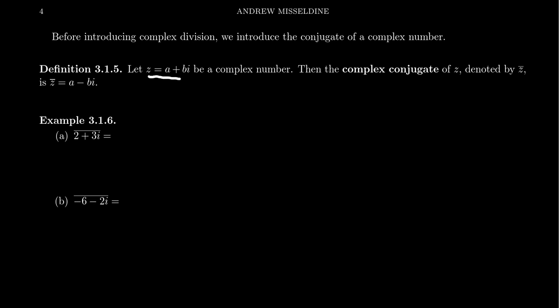Let's say that we have some complex number z equals a plus bi. Then we define its conjugate to be the complex number where you switch the sign of the imaginary part — so plus goes to minus and minus goes to plus. You often denote this by drawing a bar over the complex number. For example, if I take 2 plus 3i, its complex conjugate is just 2 minus 3i.